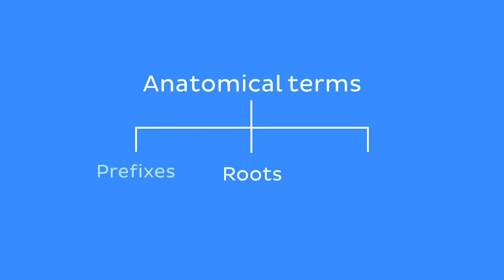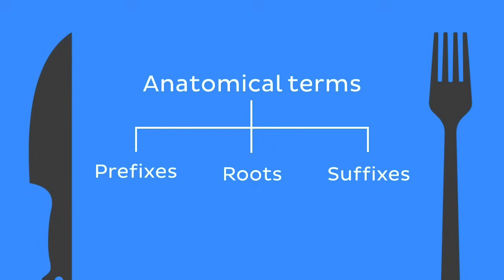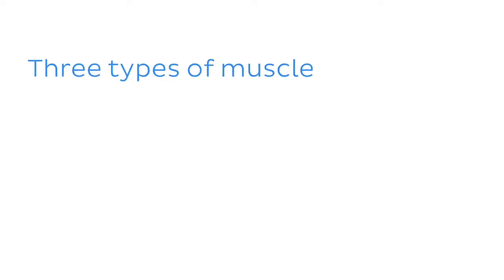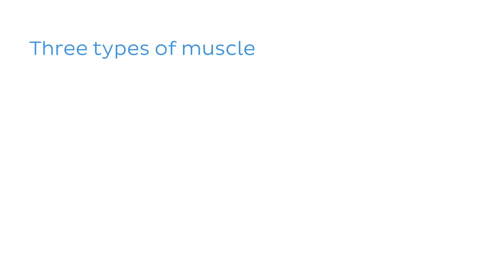Roots, prefixes, and suffixes. But before I get to the meaty terminological stuff, let's begin with the three most basic terms about muscle, which are the three types of muscle found in the body.